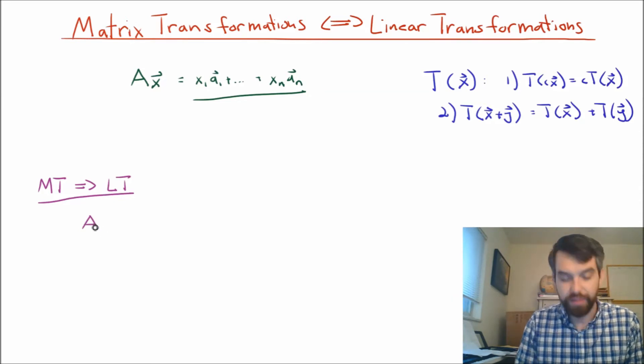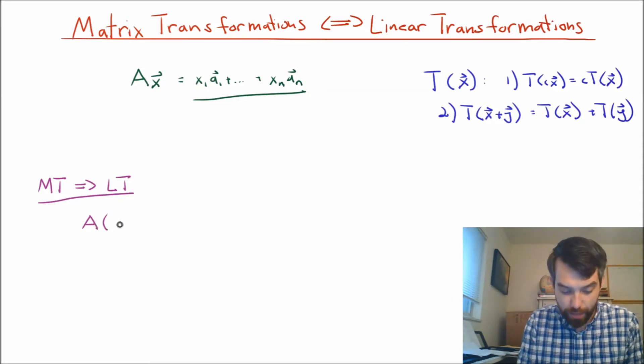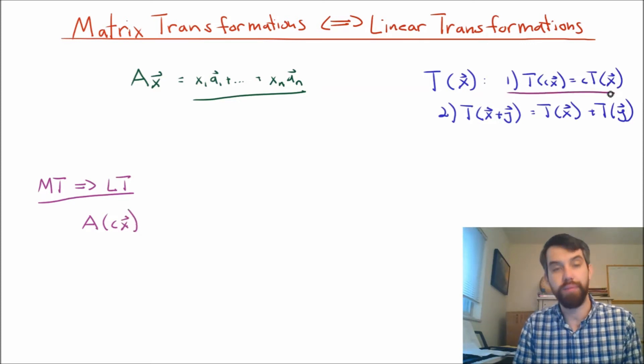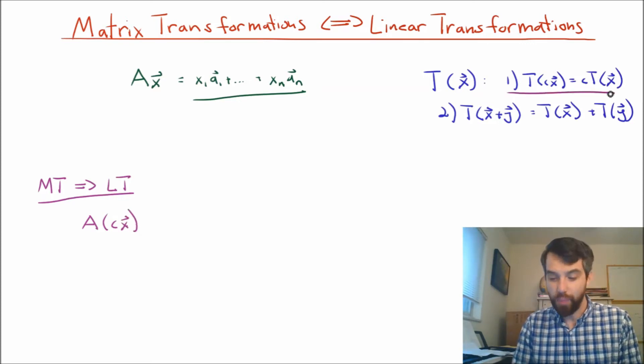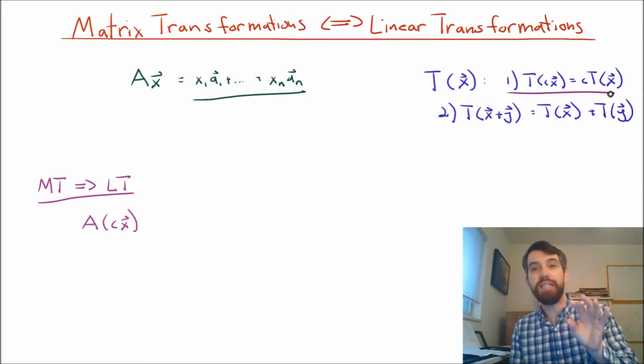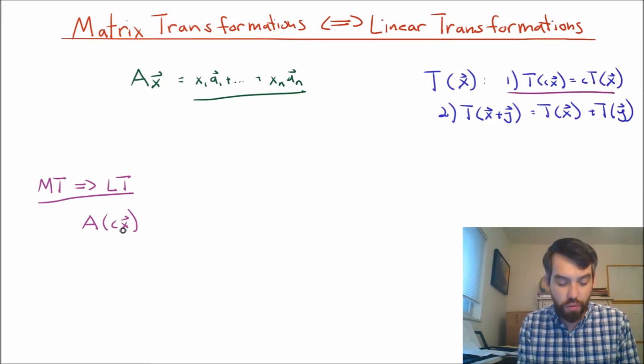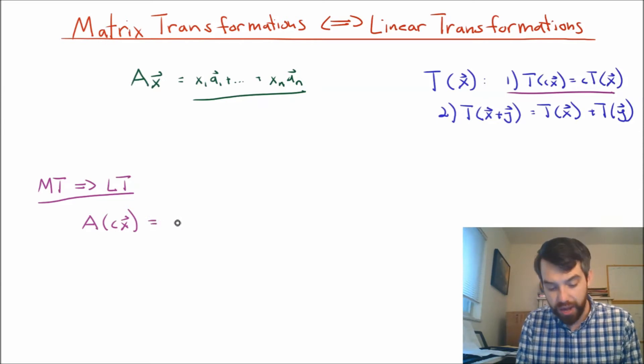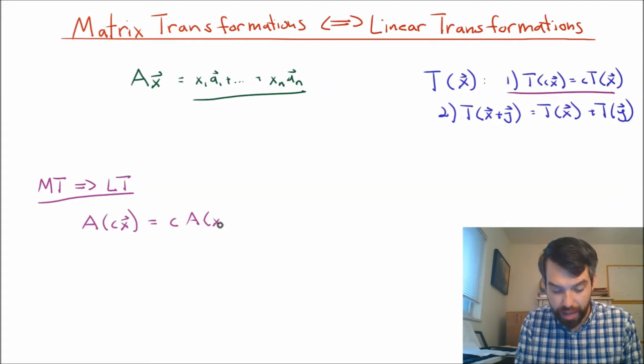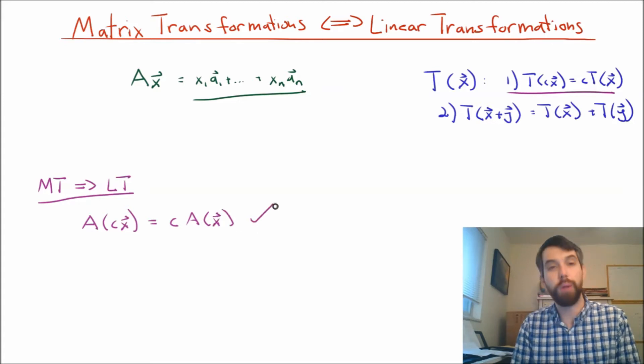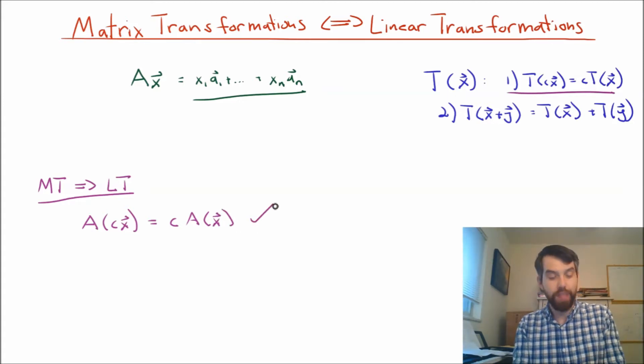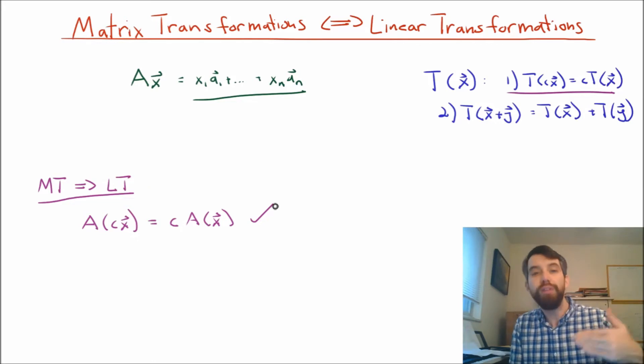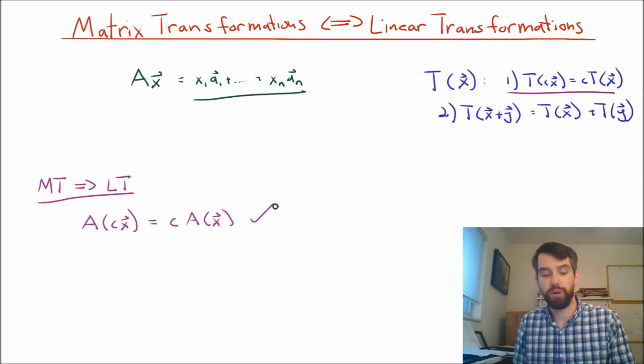If I take the matrix A, and I multiply it by Cx, what I'm trying to do, if I want to come up here and get this first property, I want to show that this is equal to C times Ax, but we know that it is. We know that that scalar multiple, we can move it out the front, and it is just going to be written as CAx. So, in other words, that first property is indeed true. And the reason why we know this is true is because we've previously shown it. It was one of the algebraic properties for matrix vector multiplication.